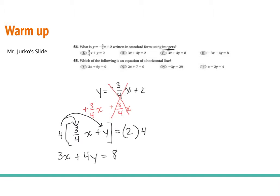That gives us 3x plus 4y equals 8, and that is answer choice C. Number 65: which of the following is an equation of a horizontal line? Remember, horizontal lines are the ones where y equals a number. If y is only equal to a fixed number, no matter what x is, y is always going to be something — that's a horizontal line. The only answer that only has y in it would be H. So our first answer was C and our second answer was H.